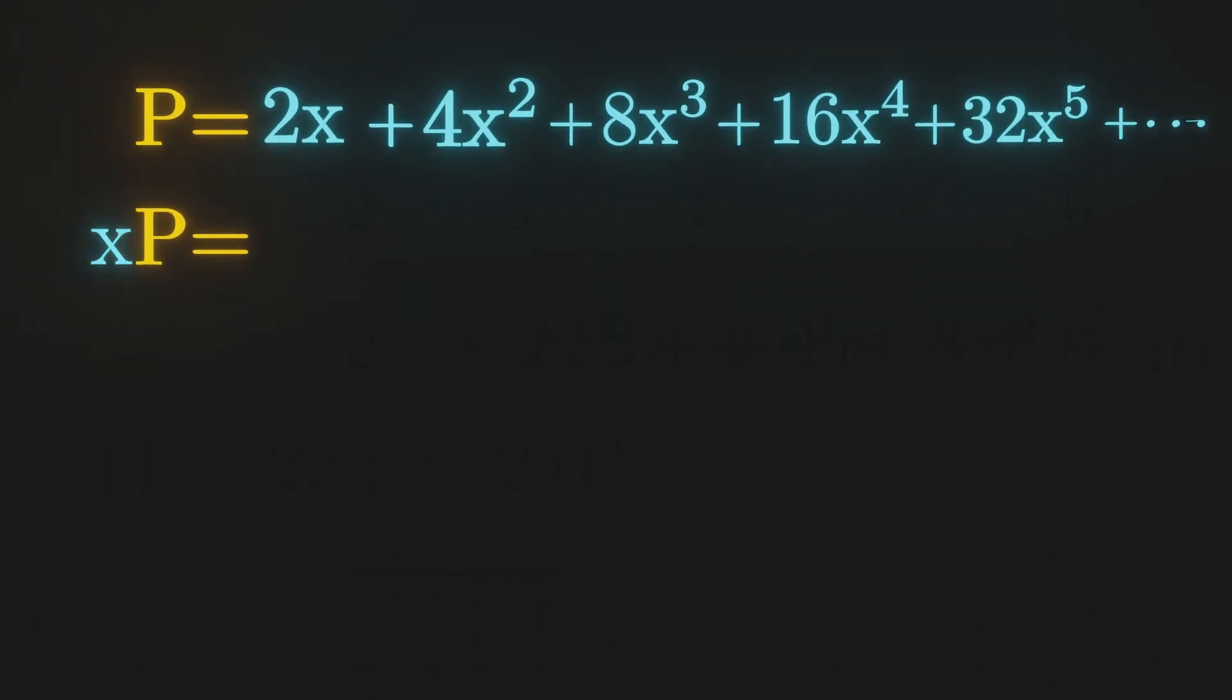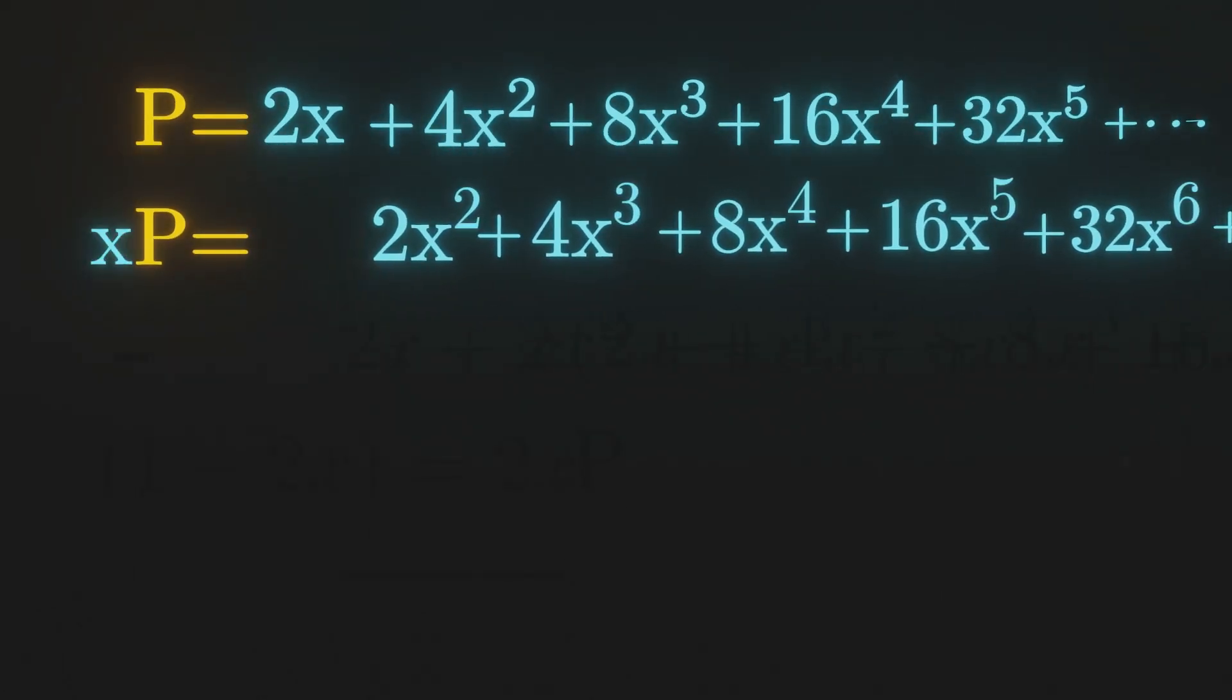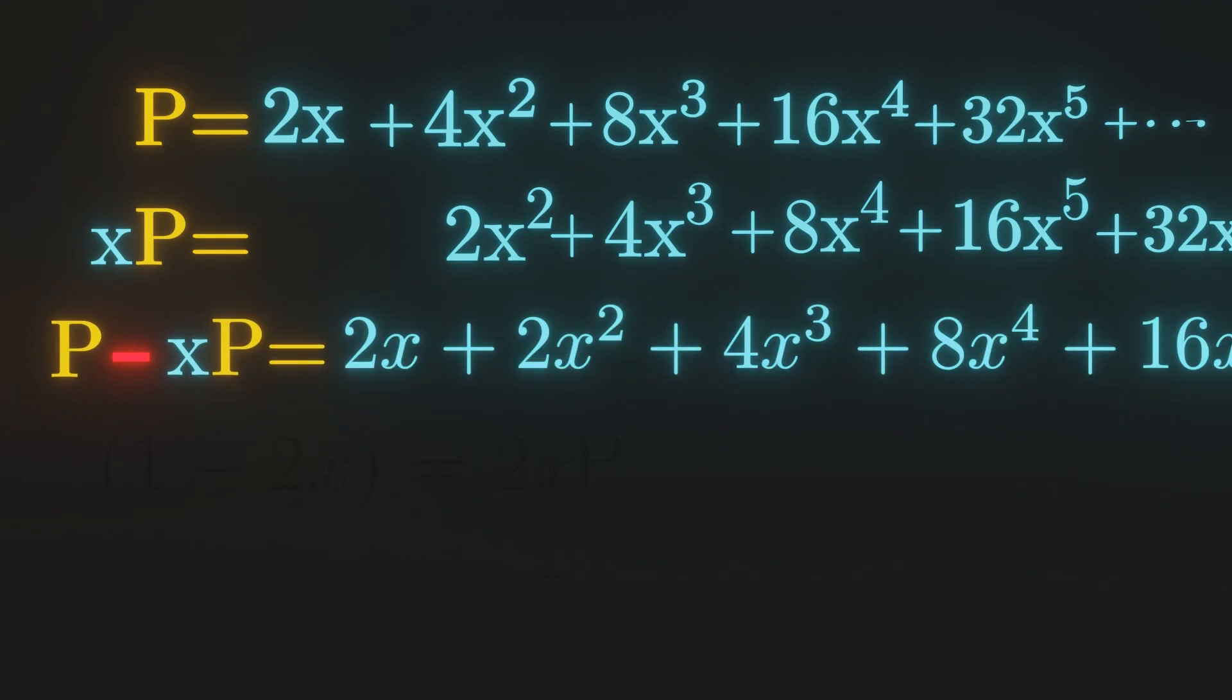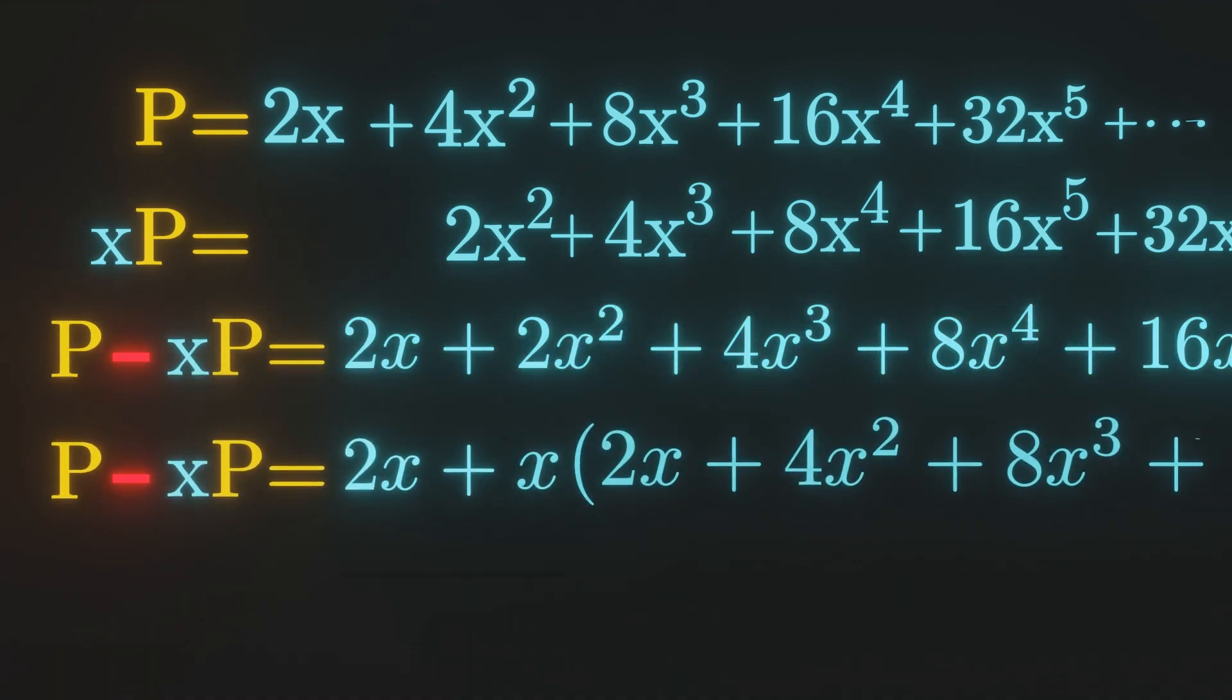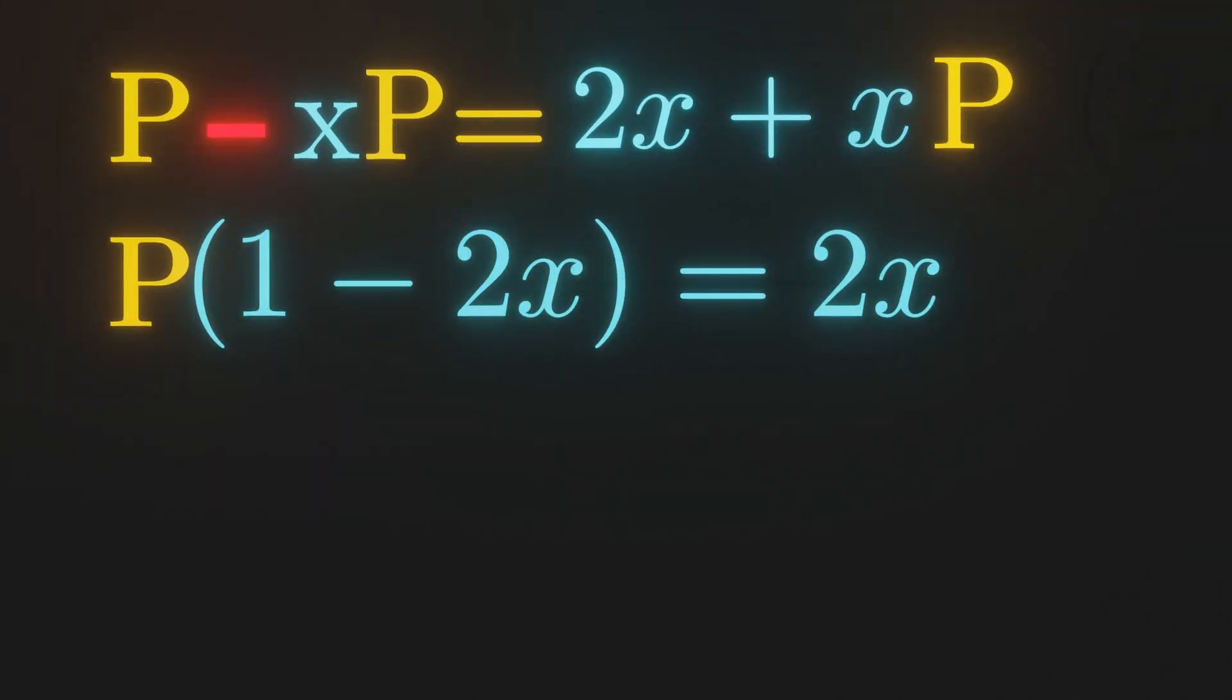We can multiply the series by x, and line them up so we can subtract them. We can factor out an x from this, and get our original series p, so we get the following relation. We can then solve for p.